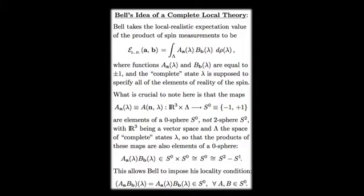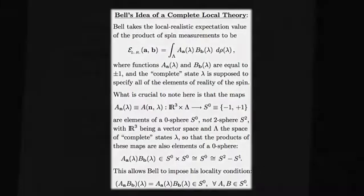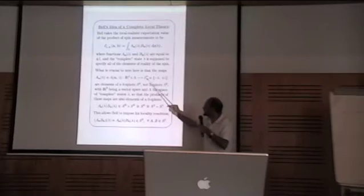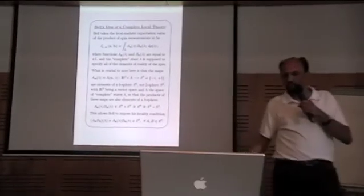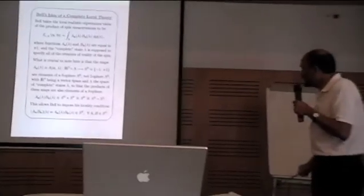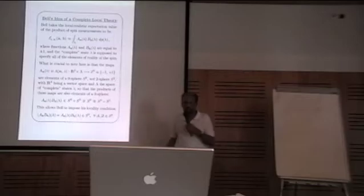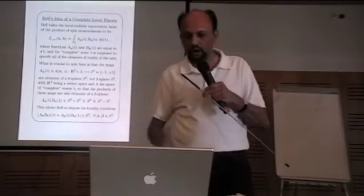What he assumes is some complete state lambda, and given direction A and B, an expectation value is given by that, and the variable here is the ordinary variable, not an operator, and it follows this map. But X0 is a zero sphere. Clearly, it's not a two sphere. So, my claim is that this is incorrect, it has to be two sphere, and that follows from EPR argument itself. Bell actually did not respect the original EPR argument correctly.